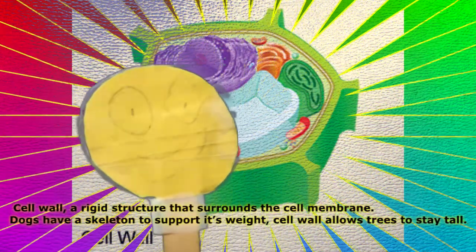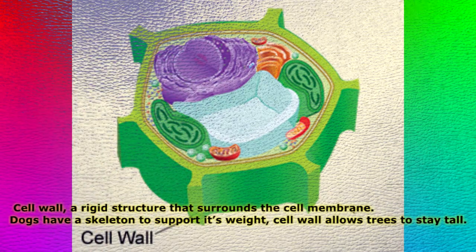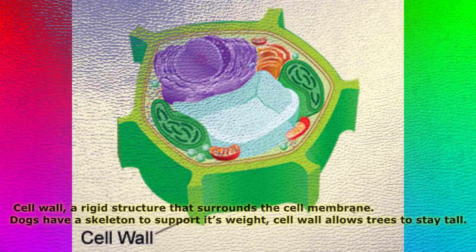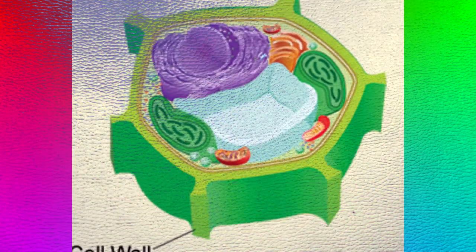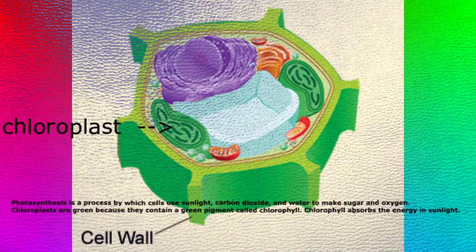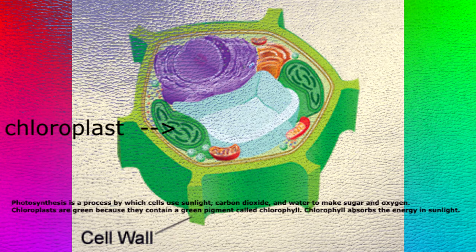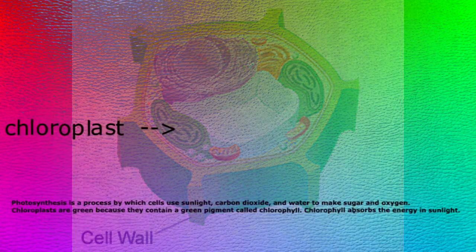Now it's time for unique organelles found only in plants. Cell wall — a rigid structure that surrounds the cell membrane. Just as dogs have a skeleton to support their weight, the cell wall allows trees to stay tall. We also find chloroplasts, organelles where photosynthesis occurs. Photosynthesis is a process in which cells use sunlight, carbon dioxide, and water to make sugar and oxygen. Chloroplasts are green because they contain a green pigment called chlorophyll, which absorbs the energy in sunlight.